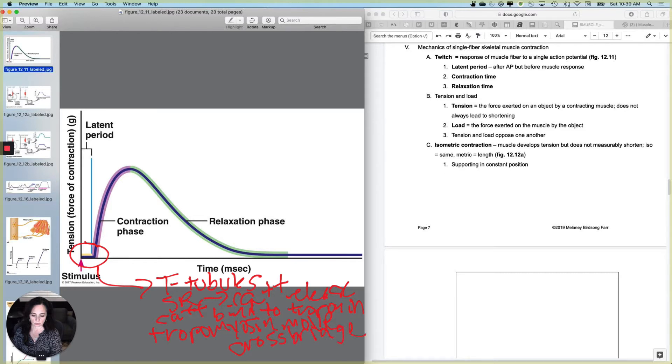So that is why that there is actually a time, right? Because all of this stuff isn't instantaneous. So there is a latent period between when the muscle actually is stimulated and when it actually starts wiggling, even at a microscopic level.